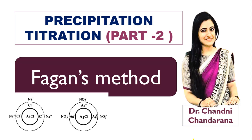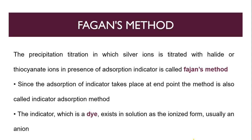Hello dear learners, welcome to this second part of precipitation titration. Today we will see one of the precipitation titration methods — it's Fajan's method. In Fajan's method, the silver ion is titrated with halide or thiocyanate ions in the presence of an adsorption indicator. This is known as Fajan's method.